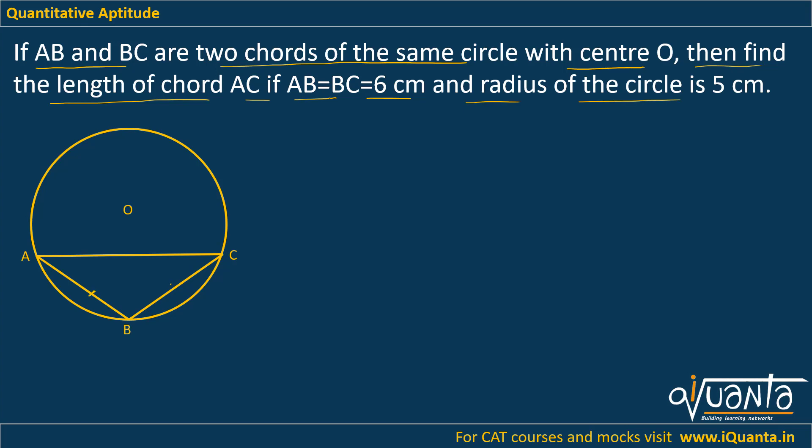So we have been given that AB is equal to BC and AC is a chord. So AB and BC, their length is 6 each. We have also been given the radius, so let this be the center. This length will be 5 and this will also be 5.